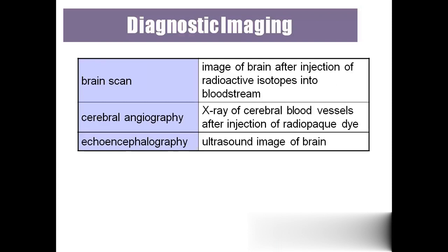'Brain scan' comes under nuclear medicine. An image of the brain is obtained after injecting radioactive isotopes. They can then see the entire brain — every gyrus and cell — and even small areas will be visible in the brain scan.